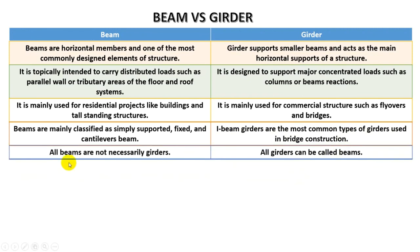Wall beams are not necessarily girders — we cannot call a wall beam a girder — but a wall girder can be called a beam.